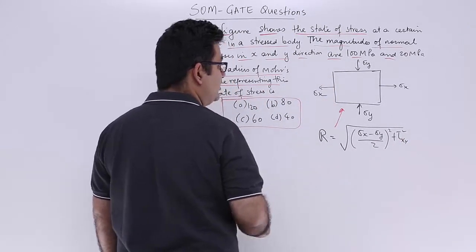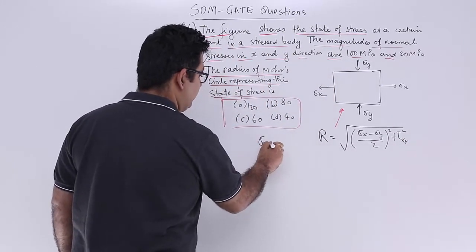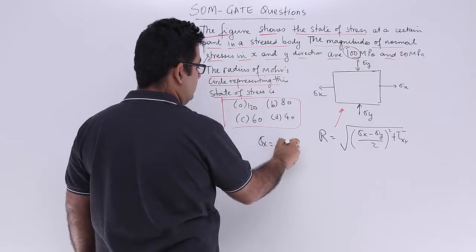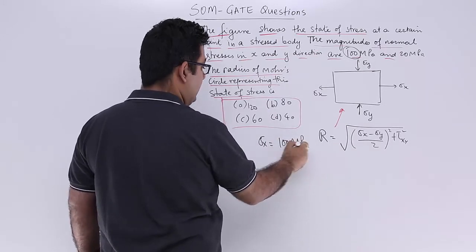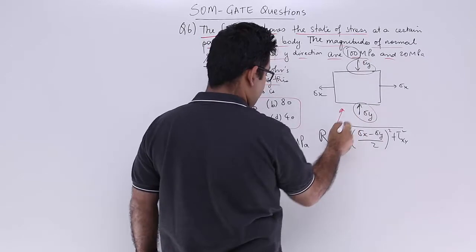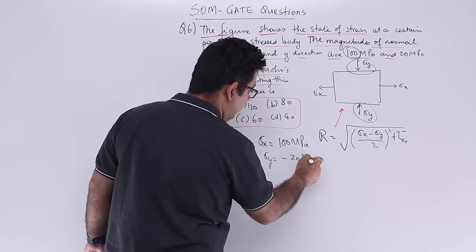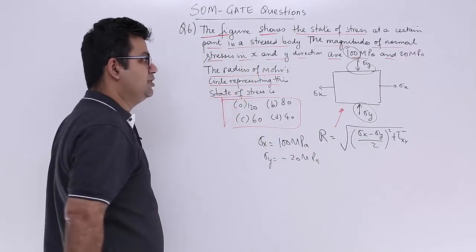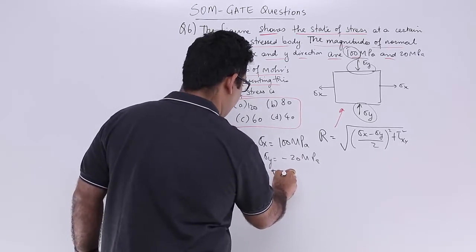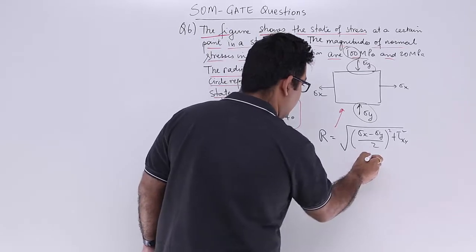Now if you look at this, you're given sigma x as 100 MPa because this is in x direction. And sigma y, this is a compressive stress, so it will be minus 20 MPa. There is no shearing taking place on this element, so tau xy would be 0. Just substitute these values.